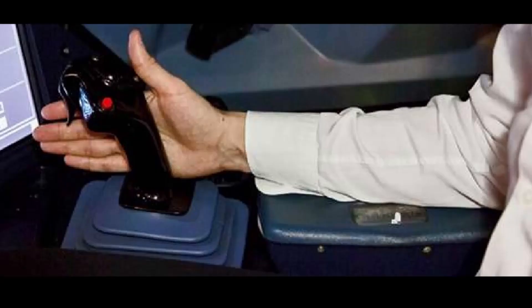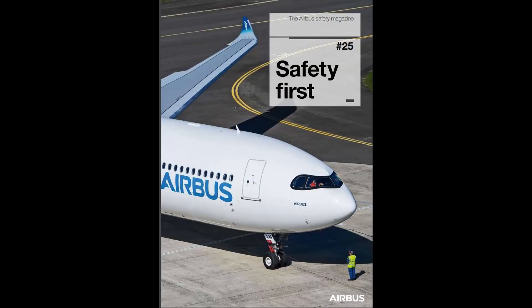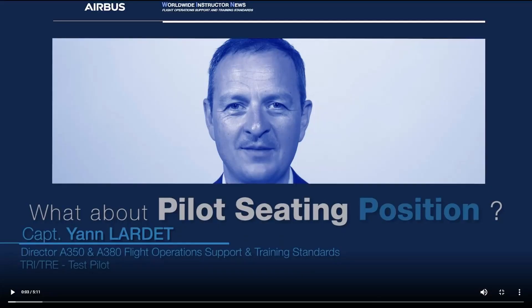Pilots use their side stick when they manually fly the aircraft. In order to operate the side stick correctly, your seating position and the armrest must be correctly adjusted. Flight instructors should pay careful attention to this during the first full flight simulator sessions. For guidance on this, please refer to our Safety First magazine number 25 and the video 'What about pilot's seating position?'